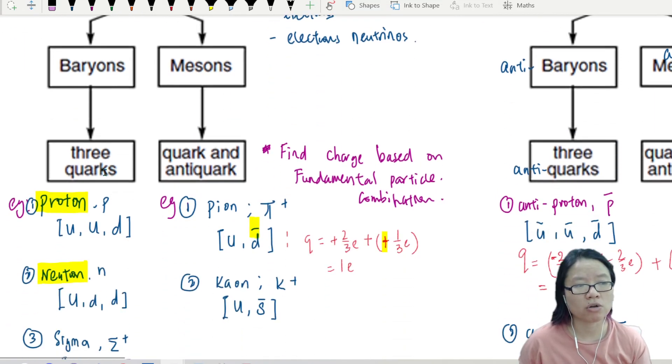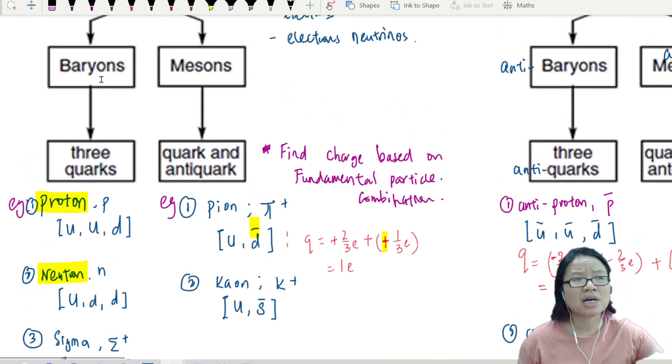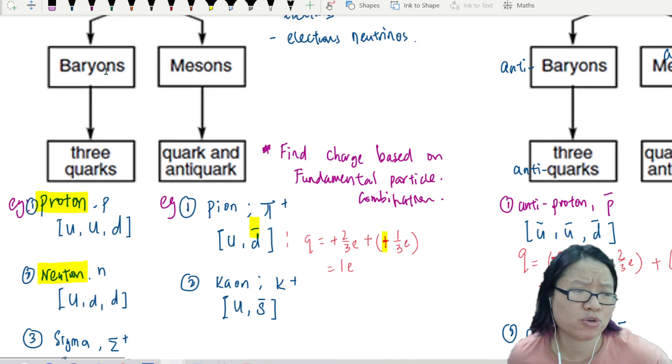So baryons got three quarks, the popular one, proton, neutron. The not so popular one is like sigma. And if you go on Wikipedia page, there's a whole list of possible baryons. But we only care about proton and neutron. Of course, they are the predominant ones in the universe, okay?